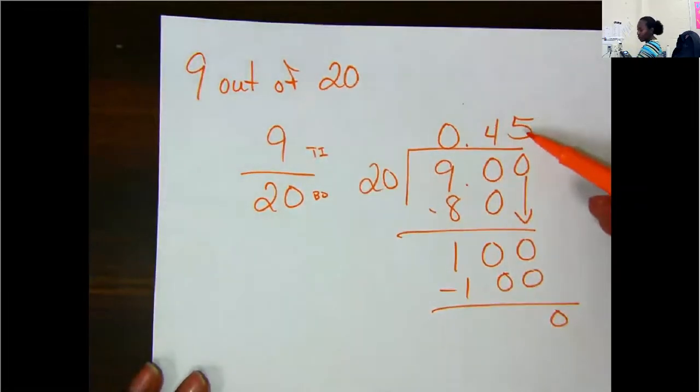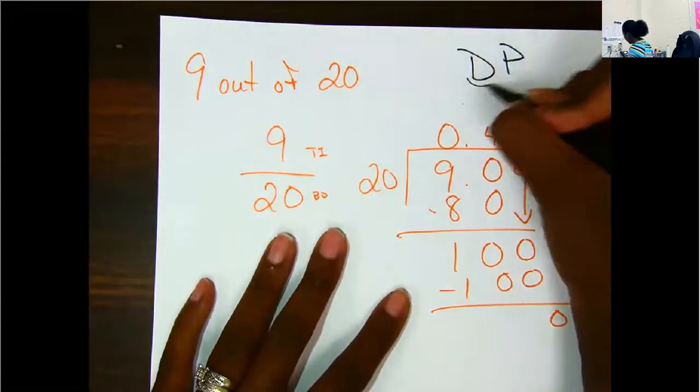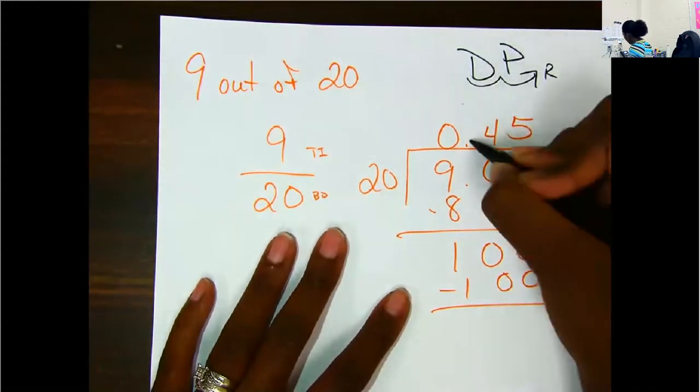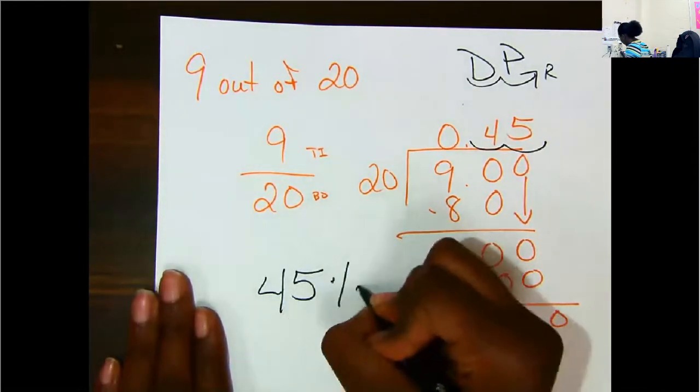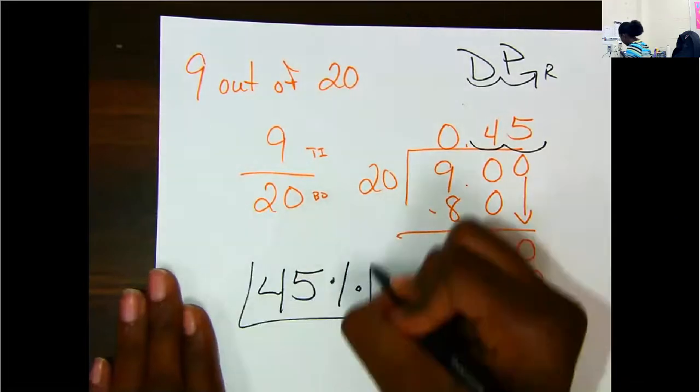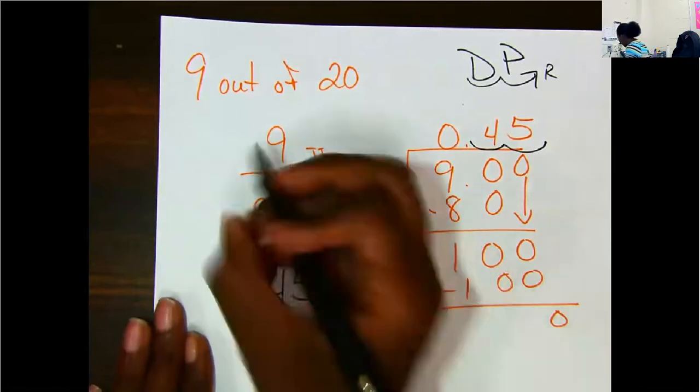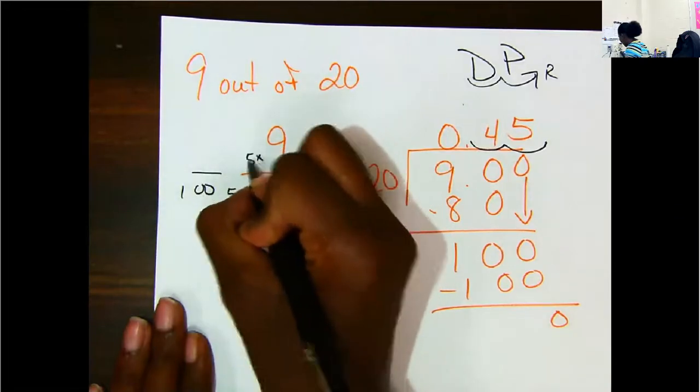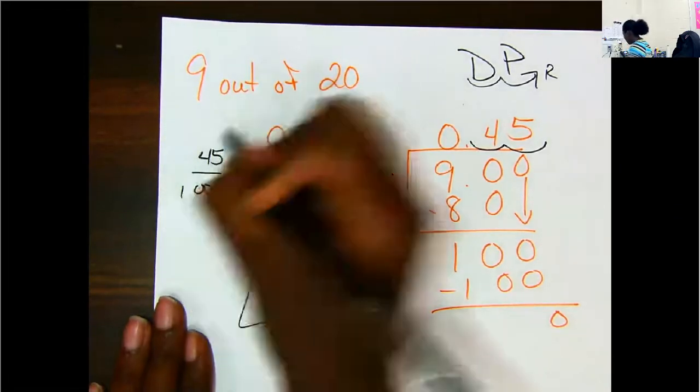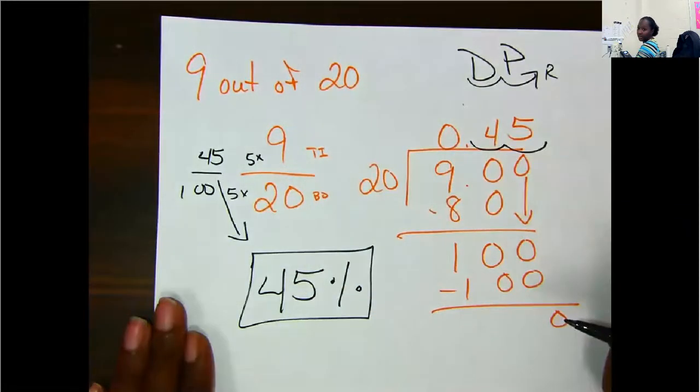But remember, we don't want a decimal. We want a percent. So we're going to use Dr. Pepper, 2 to the right, 1, 2. So my percent is 45%. If you saw that you could make this equal to 100, which you can, 20 times 5 is 100. So 9 times 5 is 45. 45 out of 100 is 45%, okay?